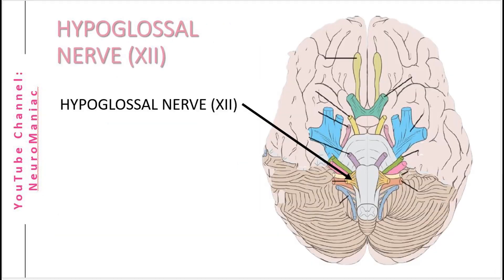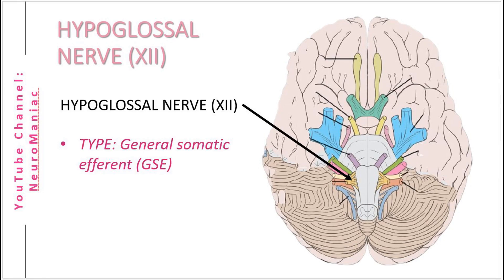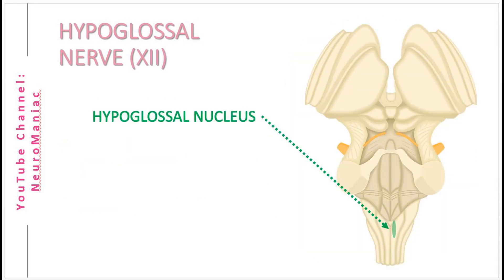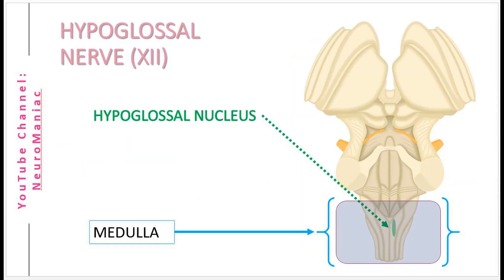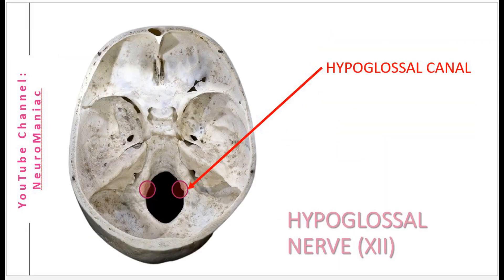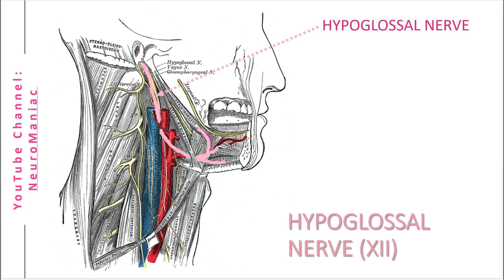Let's move on to the final cranial nerve, the hypoglossal. The function of this general somatic efferent nerve is to enable tongue movement. The nerve originates from the hypoglossal nucleus and emerges from the medulla region. It then exits the cranial cavity from the hypoglossal canal located in the posterior cranial fossa. It's not visible on this image here, but if we zoom in, we can see the hypoglossal canal labelled here in green. Extracranially, the nerve descends down the neck to the mandible bone to synapse at the extrinsic and intrinsic muscles of the tongue.